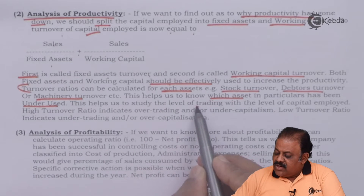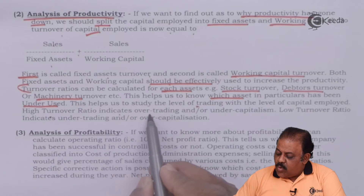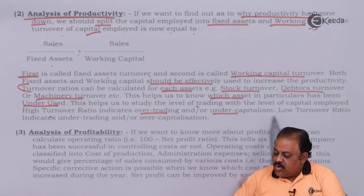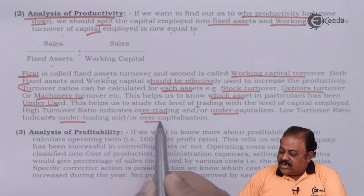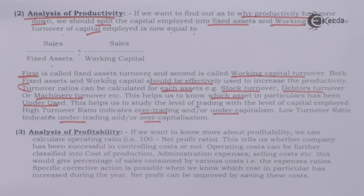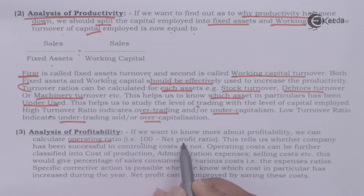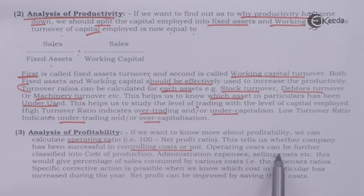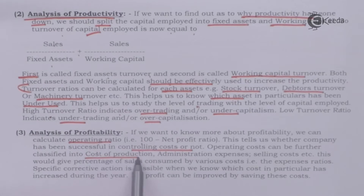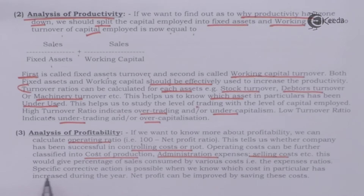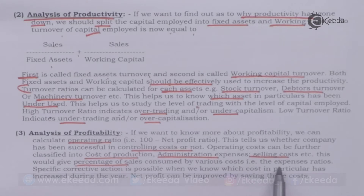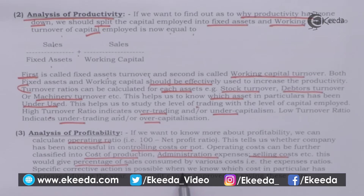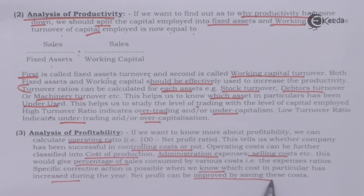This helps to study the level of trading relative to capital employed. A higher turnover ratio indicates over-trading or under-capitalism; a lower turnover ratio indicates under-trading or over-capitalism. For analysis of profitability, we can calculate the operating ratio (100 minus net profit ratio), which tells us whether the company has been successful in controlling costs. Operating cost can be further classified into cost of production, administration expenses, selling cost, etc., giving a percentage of sales consumed by various costs — that is, expense ratios. Specific corrective action is possible when we know which cost in particular has increased, and net profit can be improved by saving those costs.